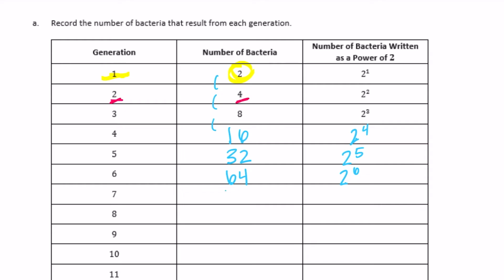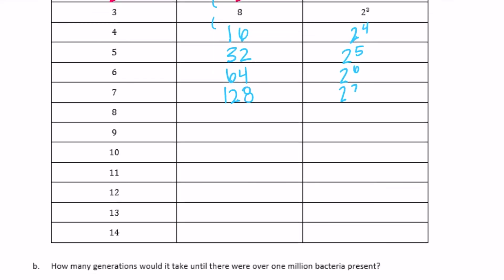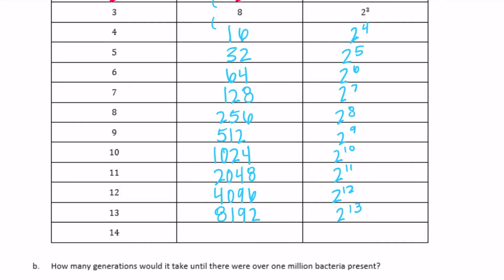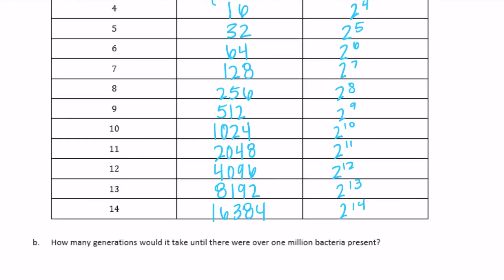Continuing to double: 256 times 2 is 512. Then 1,024 is 2 to the tenth power, and 2,048 is 2 to the eleventh power. 4,096 is 2 to the twelfth power. Doubling: 4,000 times 2 is 8,000, and 96 times 2 is 192, so that's 8,192. One more double: 16,384. We went all the way up to 2 to the fourteenth power, and the bacteria will just keep splitting — binary fission.